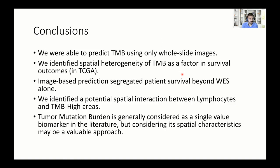In conclusion, we were able to predict TMB using only whole slide images. We identified spatial heterogeneity of TMB as a factor in survival outcomes, at least in TCGA. The image-based prediction segregated patients beyond what whole exome sequencing could do alone. We identified a potential spatial interaction between lymphocytes and TMB-high areas. Notably, tumor mutation burden is generally considered only as a single-value biomarker in the literature, but our results suggest that considering its spatial characteristics may be a valuable consideration.